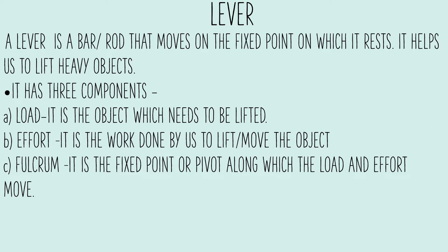A lever has three components. First is load — it is the object that we have to lift. Second is effort — it is the work done by us to lift that object. Third is fulcrum — it is the fixed point along which the load and effort move. It is also known as the main point.